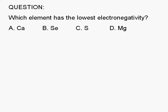Which element has the lowest electronegativity? A, calcium, B, selenium, C, sulfur, or D, magnesium?